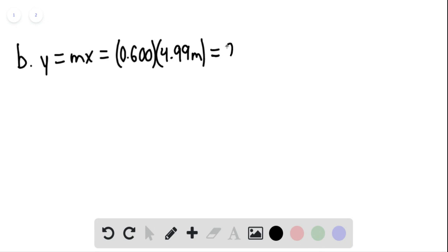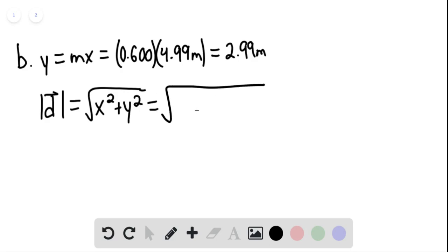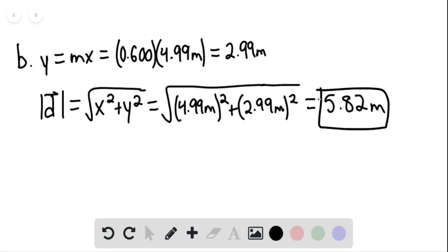We can use the Pythagorean theorem to find the magnitude of the displacement. This would be equal to the square root of x squared plus y squared, so the square root of 4.99 meters quantity squared plus 2.99 meters quantity squared. This gives us approximately 5.82 meters. This would be our final answer.